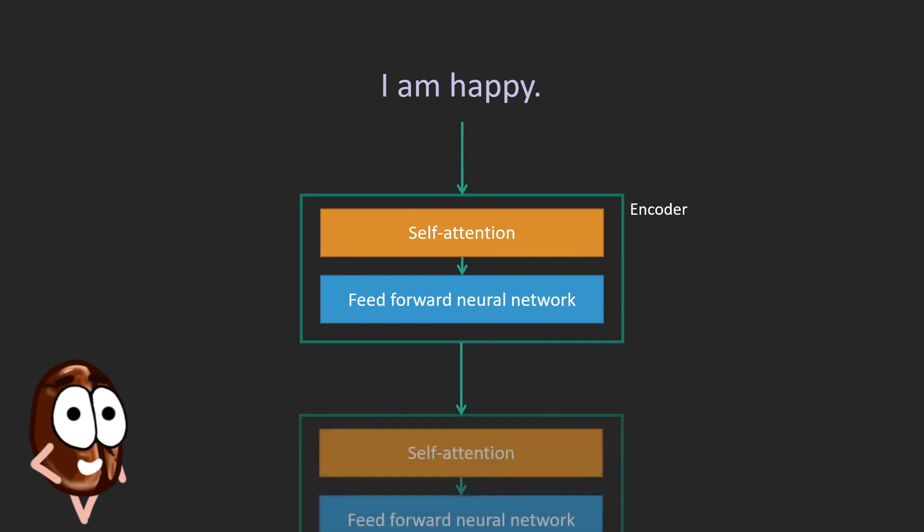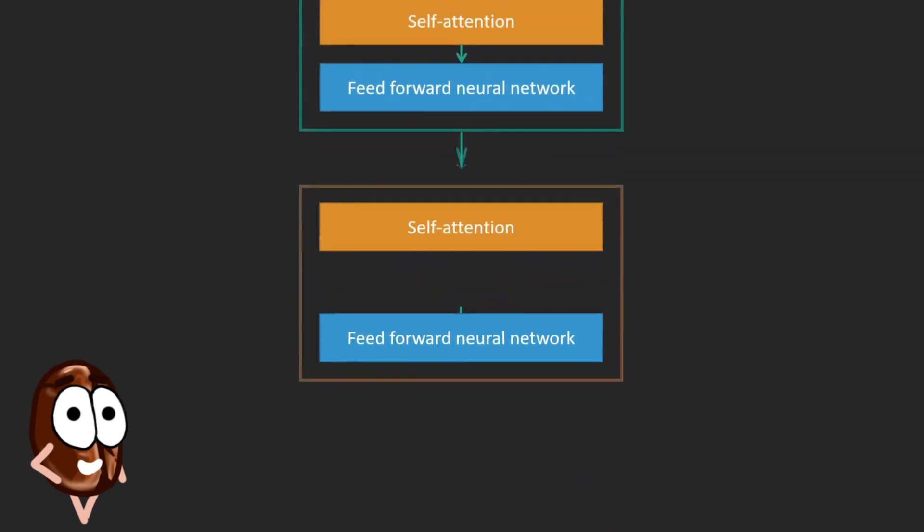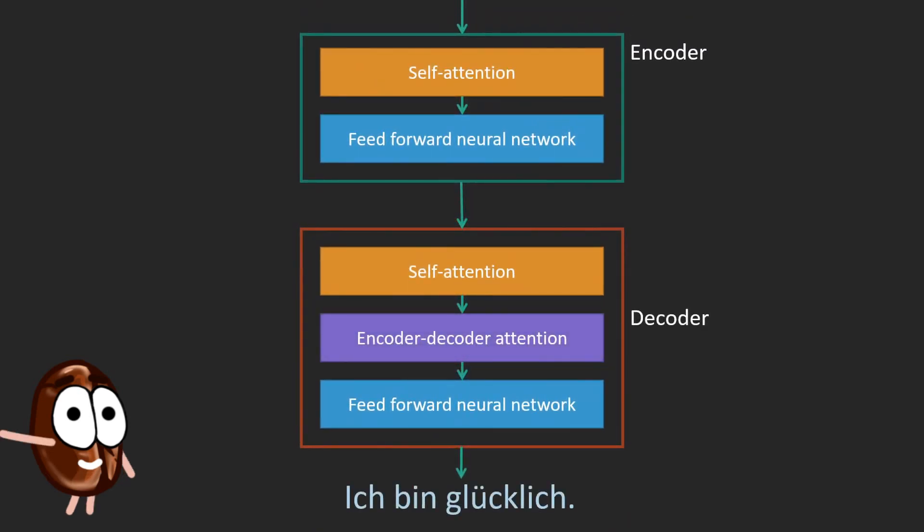After we process the inputs through a couple of these encoders, we are ready to construct a sequence which should be in this example the translation of the input after we pass it through the decoder. For the decoder, we have the same two blocks as for the encoder, with a special encoder-decoder attention layer in the middle.